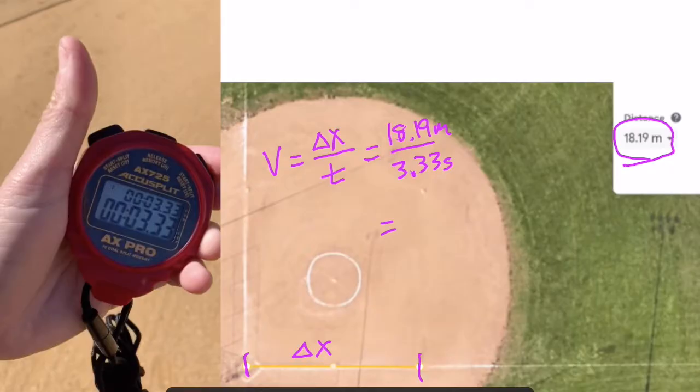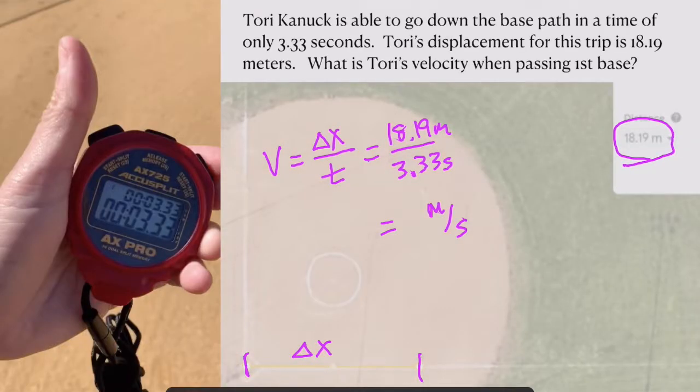And when we get our answer, that should be her velocity. So let's take a look at the question. The question asks us to find Tori's velocity as she's passing first base. We think we found the answer, but realize that that is not really true.